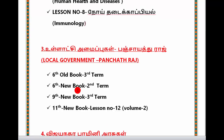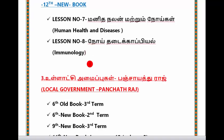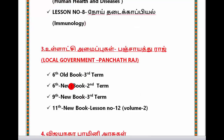The next topic is Political Science — it is a very important lesson. The books to cover are: 6th Old Book 3rd Term Book, 6th New Book, and 9th New Book 3rd Term Book. This is the topic so you can learn how to develop and learn from the book.